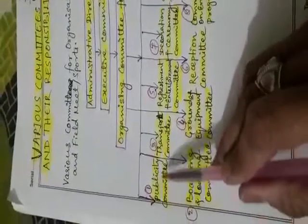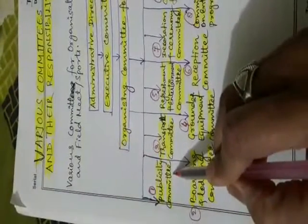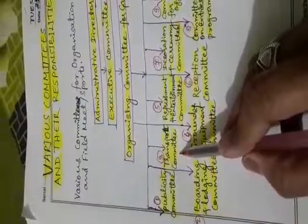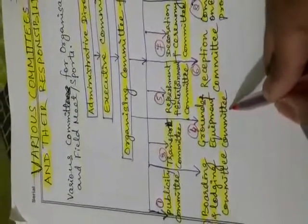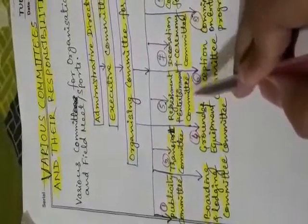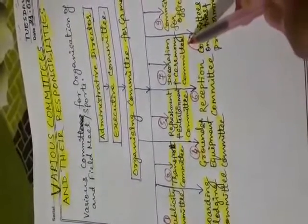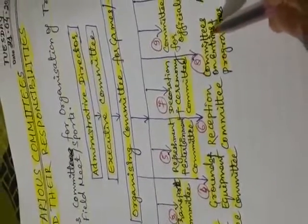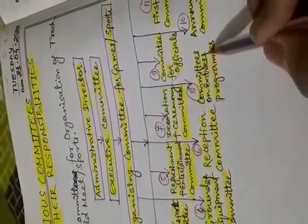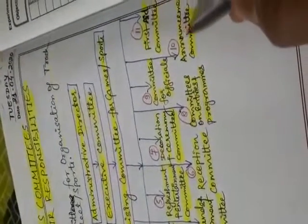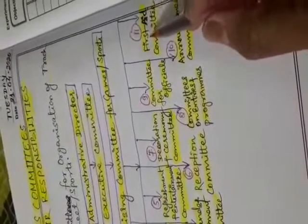Under these we have many committees such as: publicity committee, boarding and lodging committee, transport committee, ground equipment committee, refreshment and entertainment committee, reception committee, decoration and ceremony committee, committees on entries and programs, committee for officials, announcement committee, and first aid committee.